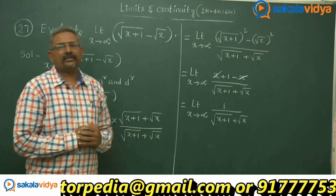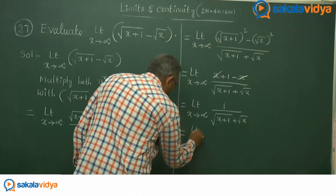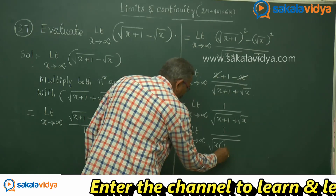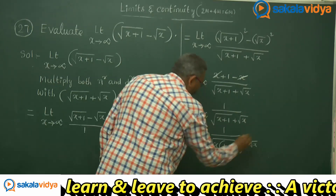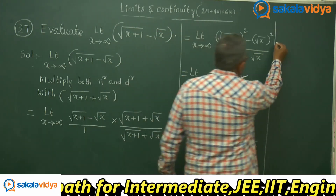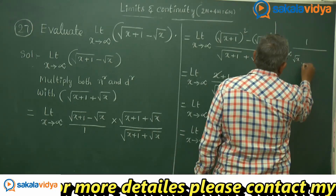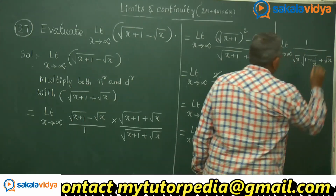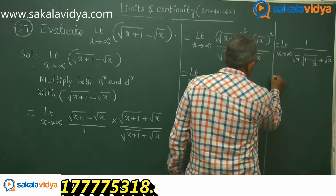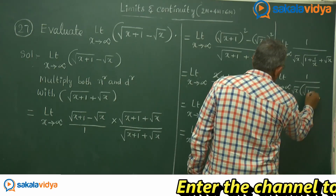Just observe the denominator — we need to take out root x as a common factor. Taking x common from inside the root gives root of x times root of 1 plus 1 by x. So the expression becomes limit x tends to infinity of 1 divided by root x times root of 1 plus 1 by x, plus root x. Taking root x out, we get limit x tends to infinity of 1 divided by root x times the quantity root of 1 plus 1 by x plus 1.